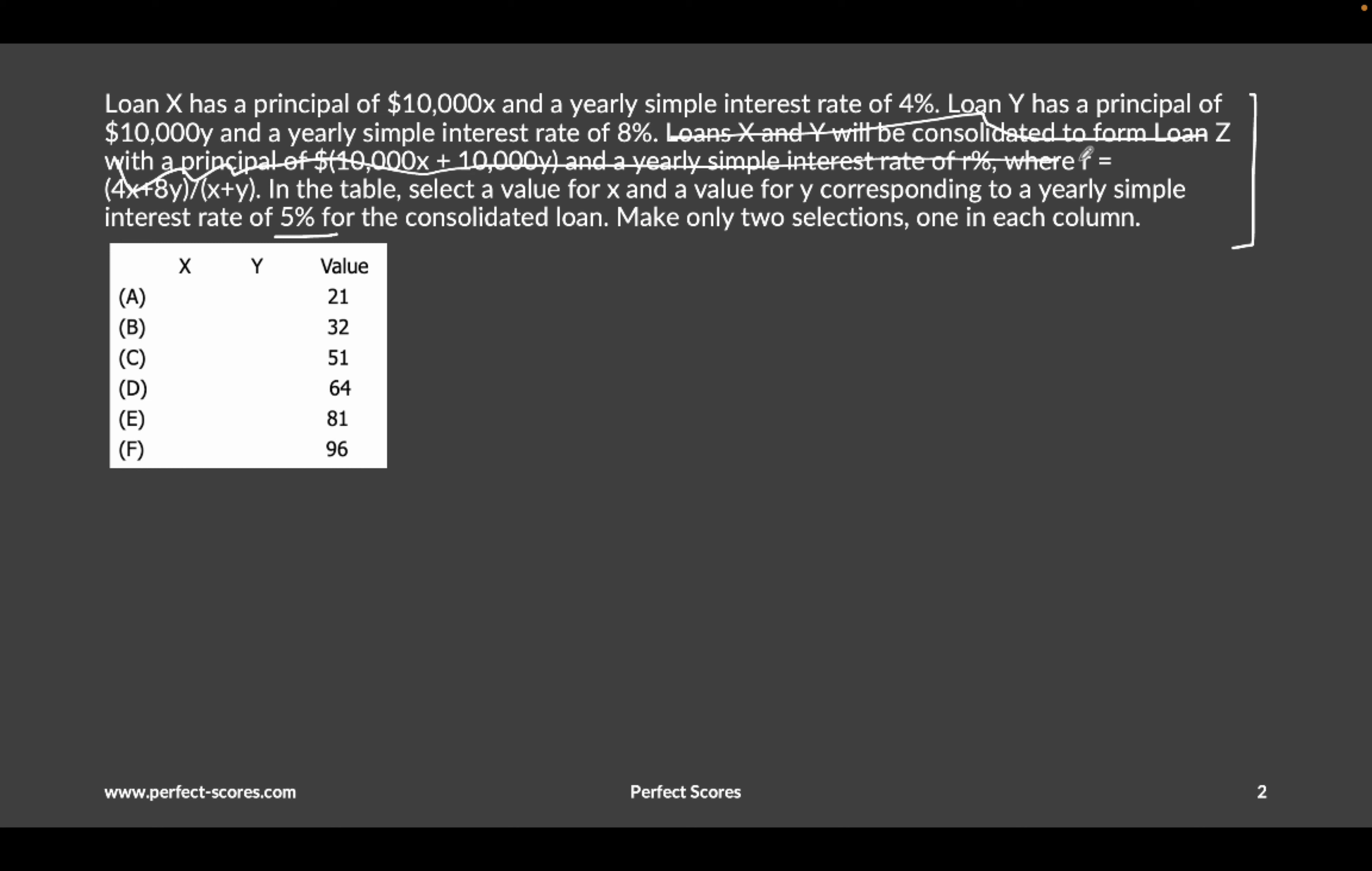What you can do is, whenever two things are being combined, whether it's interest rates or mixtures, you can actually apply alligation to it. Remember, we discussed alligation thoroughly in one of our videos whenever two things get mixed up. You're mixing up a loan of 4% with a loan of 8%, and overall you're getting 5%. That's essentially what's happening.